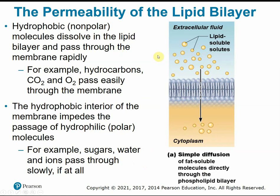Hydrophilic molecules may need to rely on assistance from proteins in the membrane. Remember: like dissolves like. Lipid-soluble substances will pass through this lipid membrane, while oil and water do not mix, so water-soluble or hydrophilic molecules like sugar would be repelled by this lipid membrane. The simplest, most straightforward type of passive transport is simple diffusion, where lipid-soluble molecules pass directly through the phospholipid bilayer with no extra intervention or assistance.